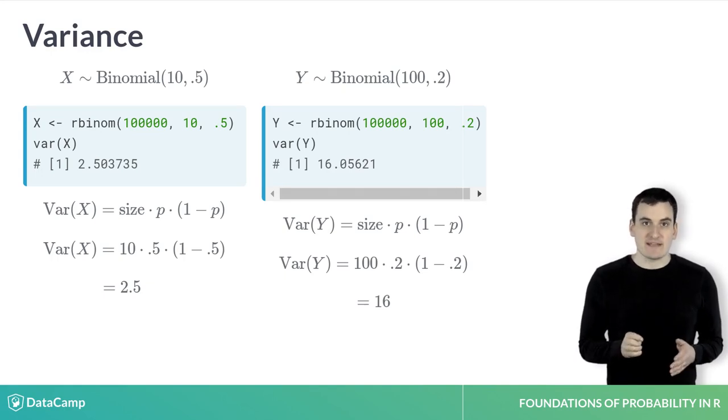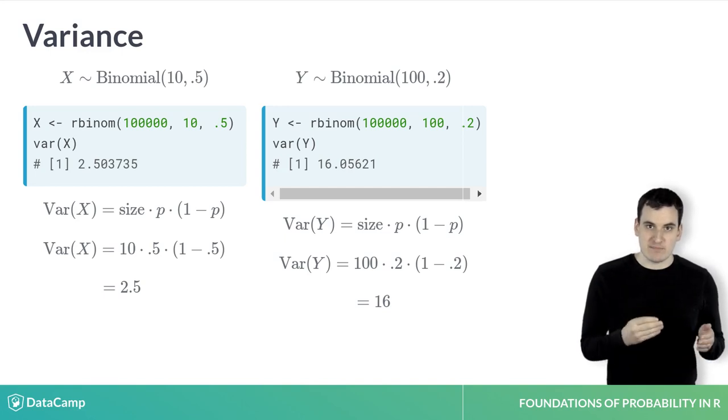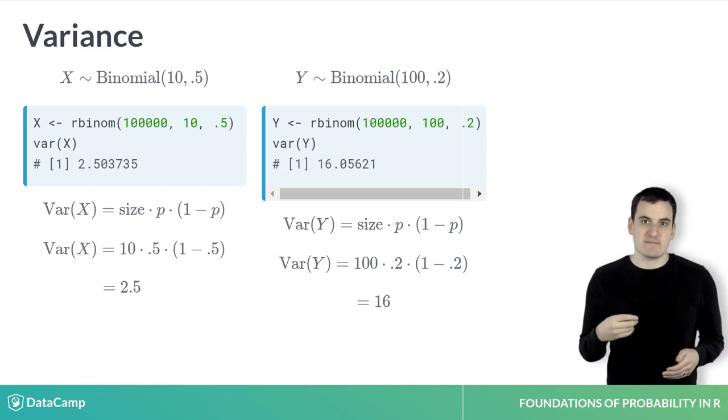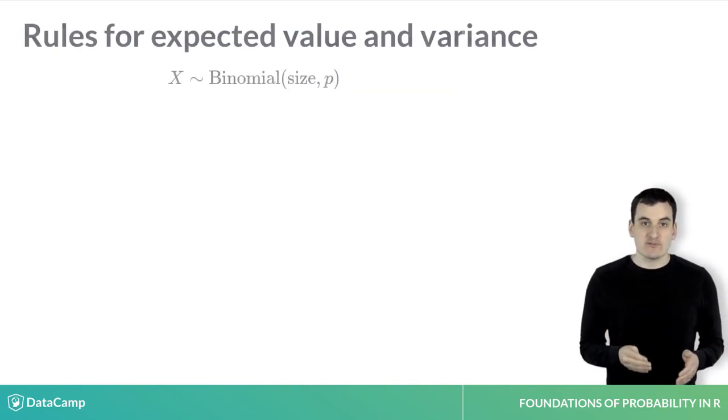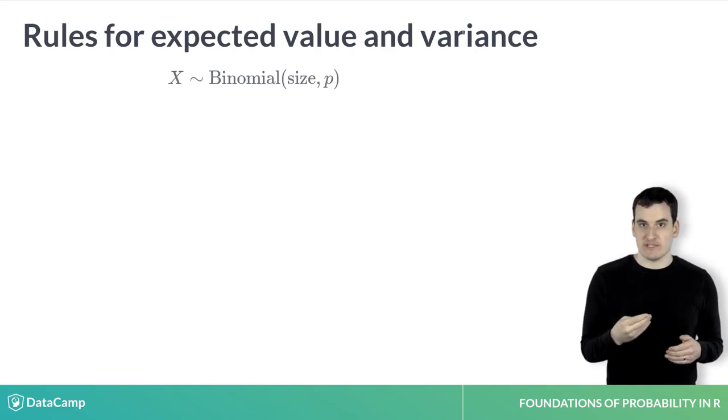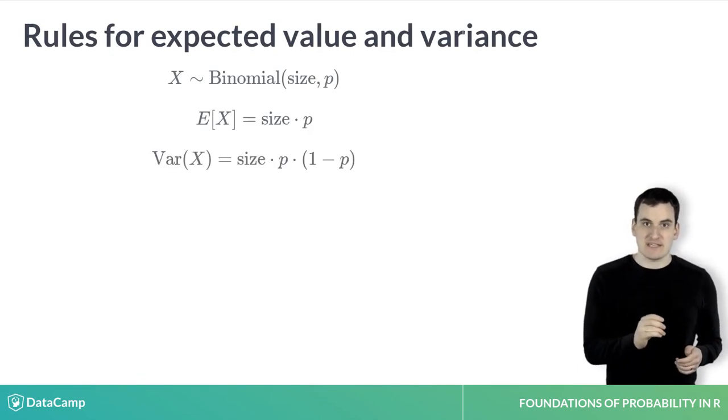Just like the expected value, simulation gives us a way to estimate properties of the distribution by drawing many values, while mathematical rules can sometimes also give you an exact answer. We thus have two rules for the properties of the binomial distribution: the expected value of the binomial is the size times p, and the variance of the binomial is the size times p times 1 minus p.